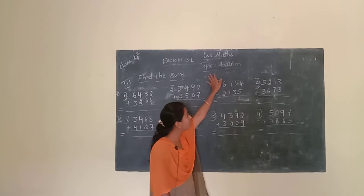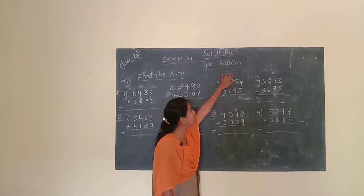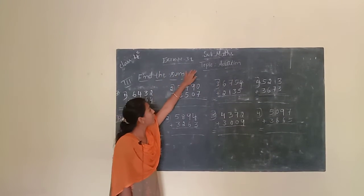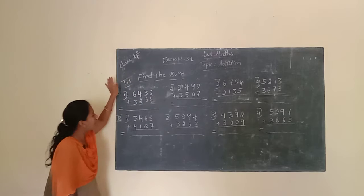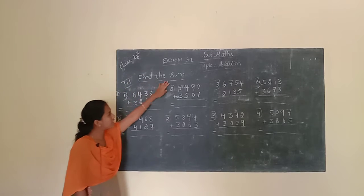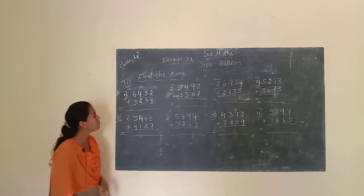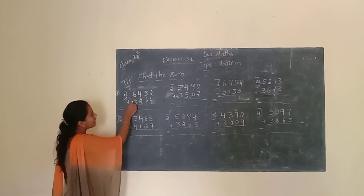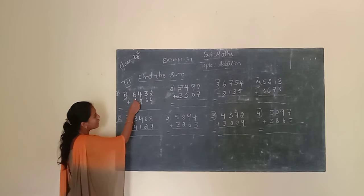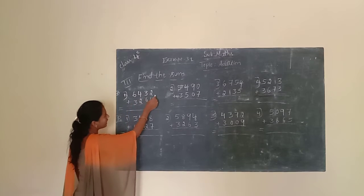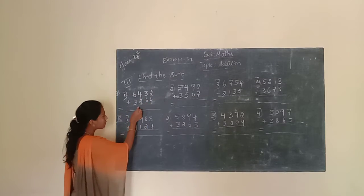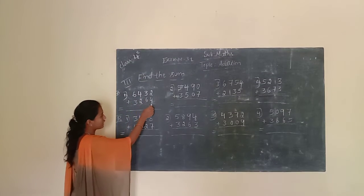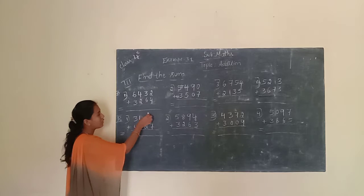Children, today we have continued the same lesson: addition, Exercise 3.1. This means given some numbers, we have to find out the sum. The first given number is 6,432 and 3,264. We have to add.